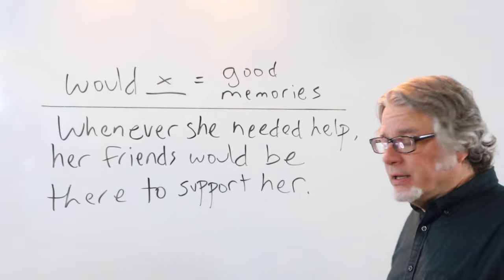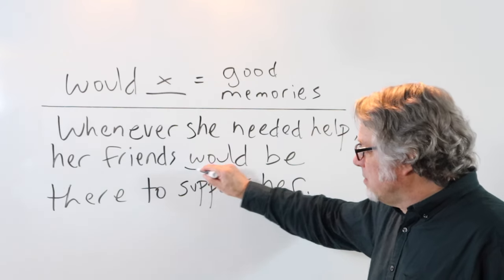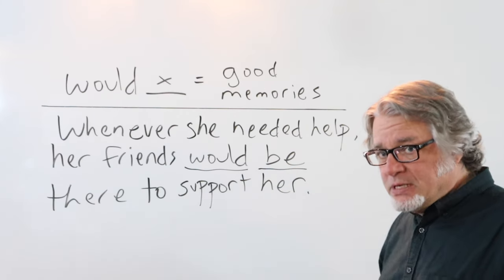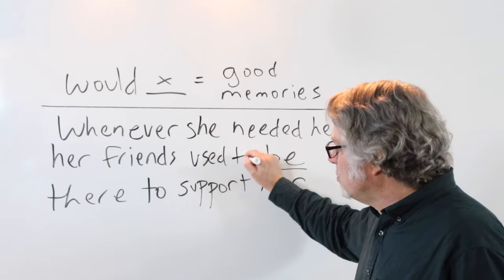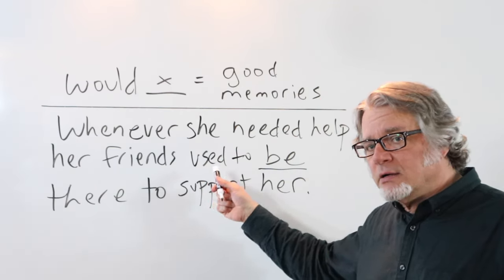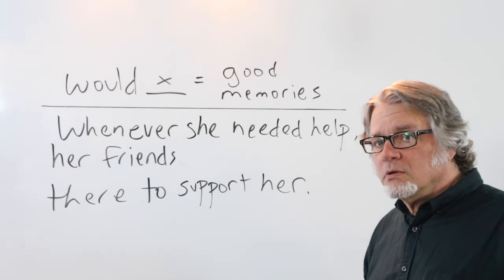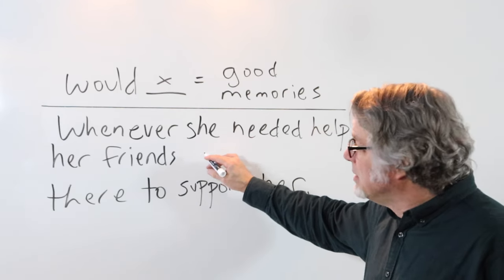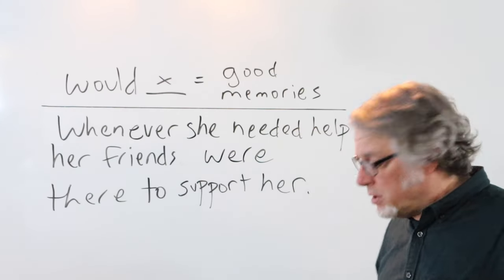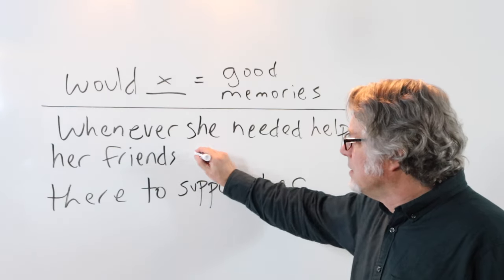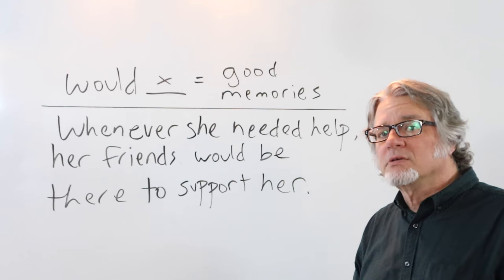'Whenever she needed help,' — with a comma — 'her friends would be there to support her.' Here's the modal verb WOULD and the main verb is BE. Sometimes it's possible to substitute WOULD with USED TO, but in this case WOULD sounds better. If you use neither WOULD nor USED TO, you could just use the verb BE: 'her friends were there to support her.' But WOULD BE implies something that happened repeatedly in the past, again and again.